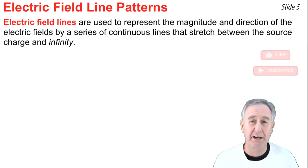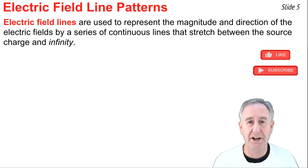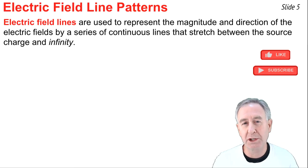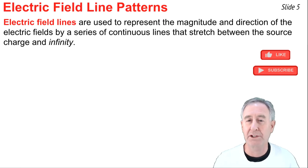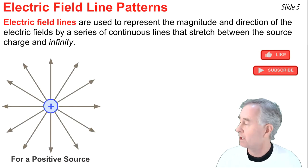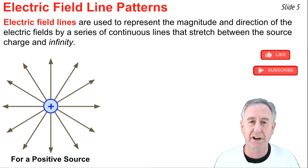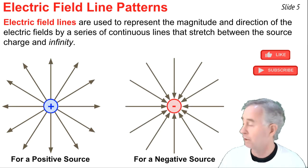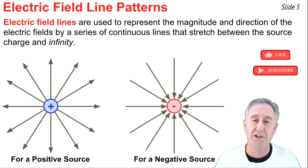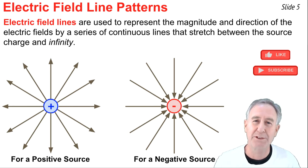Electric field line diagrams are often used to represent the magnitude and direction of the electric field around a source charge. In such situations, continuous lines are used to represent the electric field vector as these lines stretch between infinity and the source charge. Here's an example of an electric field line diagram for a positive source charge — the lines start at the surface of the source charge and extend towards infinity. For a negative source charge, the lines run in the opposite direction, starting at infinity and heading towards the surface of the negative source charge.